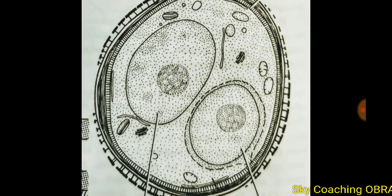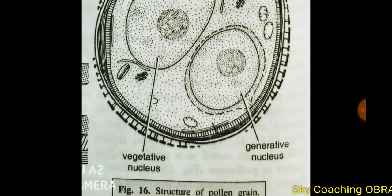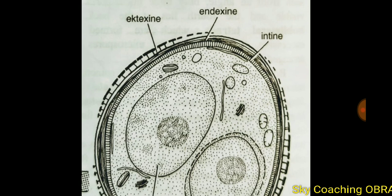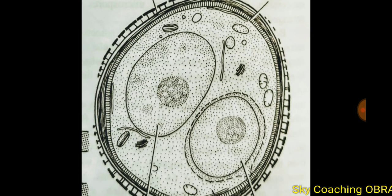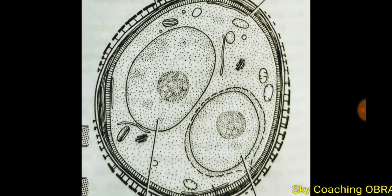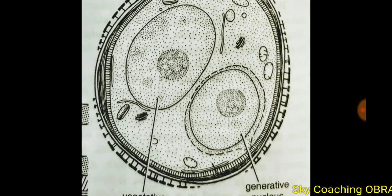Looking at the diagram of the pollen grain, you can see two nuclei inside: the vegetative nucleus and the generative nucleus. On this side, you can see the exine and intine layers. The pollen grain is of haploid nature, and both the vegetative and generative nuclei are haploid.